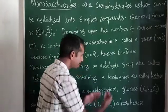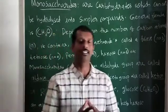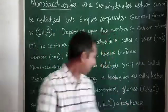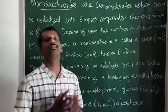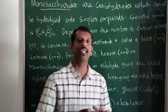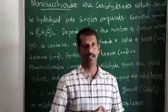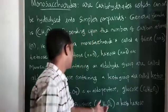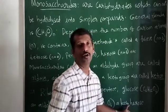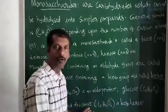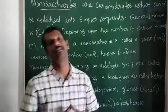Fructose has the same formula as glucose — C₆H₁₂O₆ — so it is also a hexose. But the difference between glucose and fructose is that fructose contains a keto group instead of an aldehyde group. Therefore, fructose is a ketohexose: keto meaning a ketone group is present, and hexose meaning it contains 6 carbon atoms.